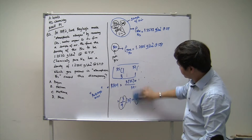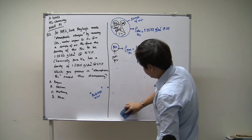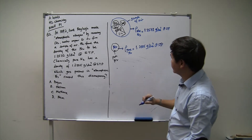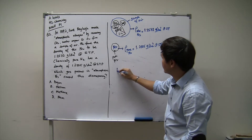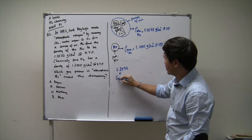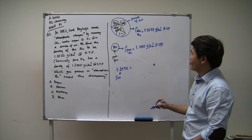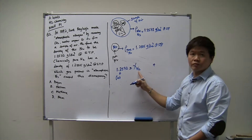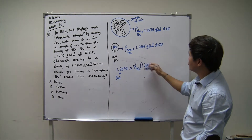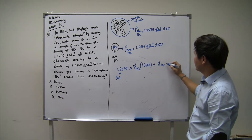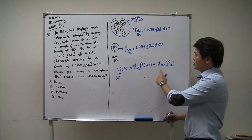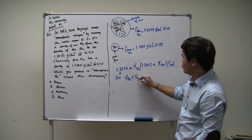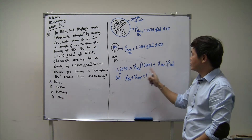Using the average property equation, the density of the mixture, 1.2572, equals X_N2 times the density of pure nitrogen (1.2505) plus the mole fraction of the impurity times the density of the impurity. Notice that the density of the impurity is not given. We also know that the mole fraction of nitrogen plus the mole fraction of the impurity must equal 1 — the sum of mole fractions equals 1. So these two unknowns are related by that second equation.